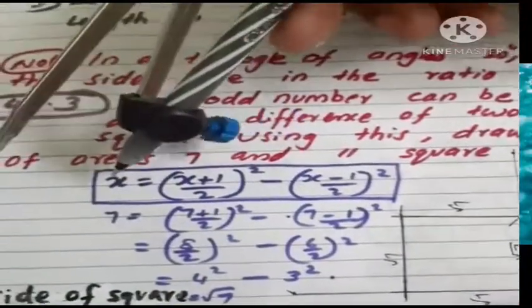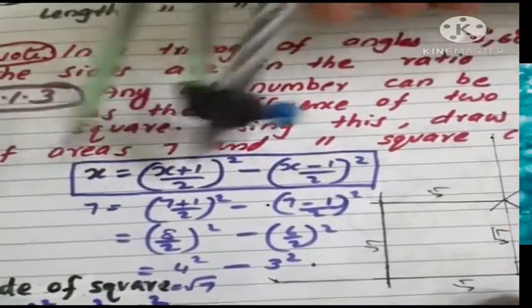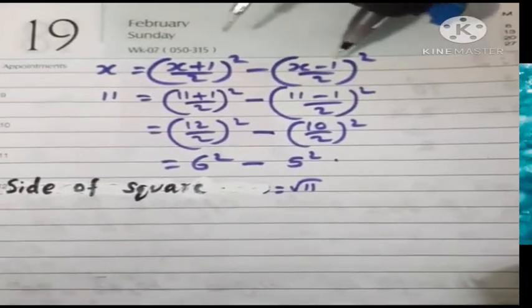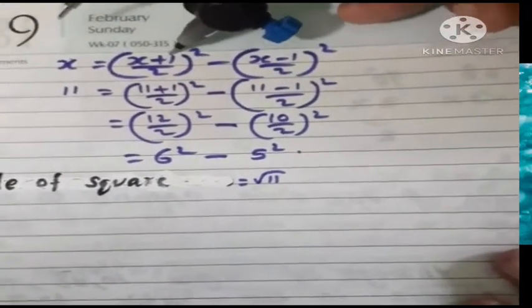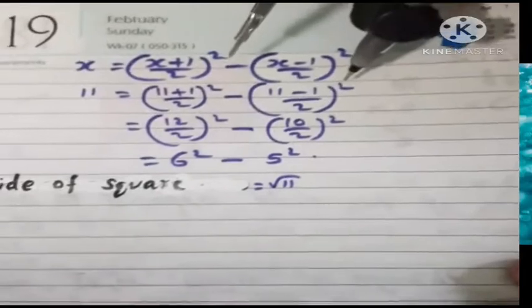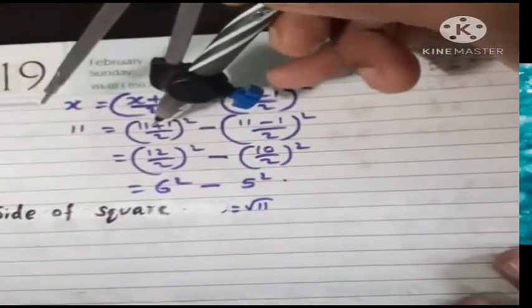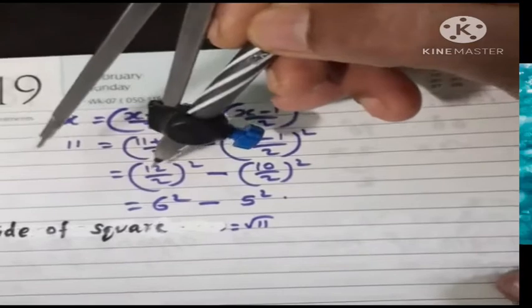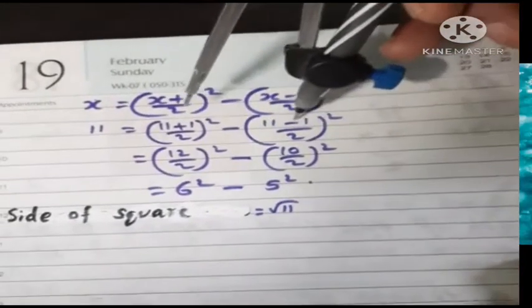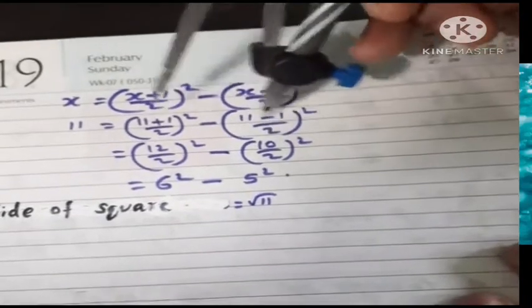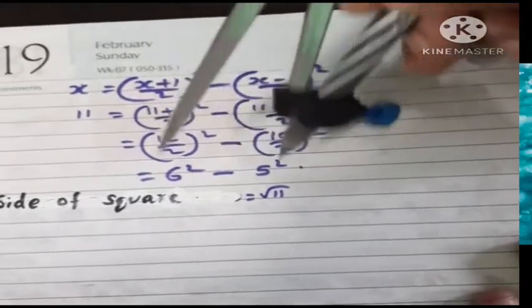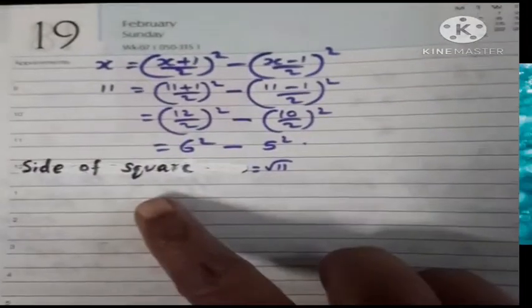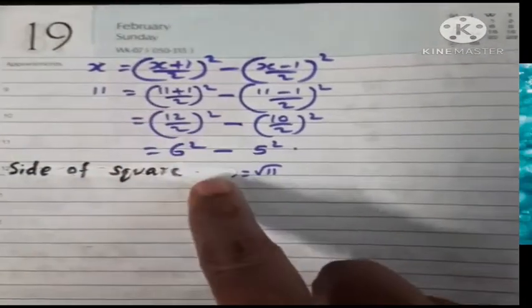That's the equation. x is 11. 11 plus 1 by 2 whole square minus 11 minus 1 by 2 whole square. That equal to 12 by 2 whole square, 11 minus 1 by 2, 10 by 2 whole square. That is 6 square minus 5 square. Side of square root 11.